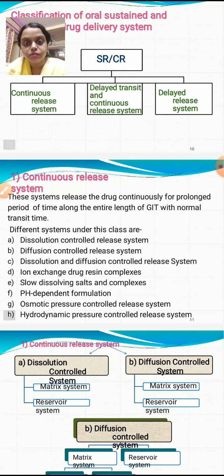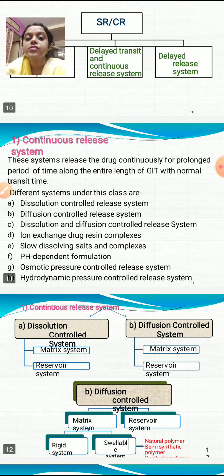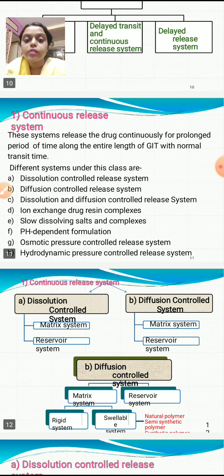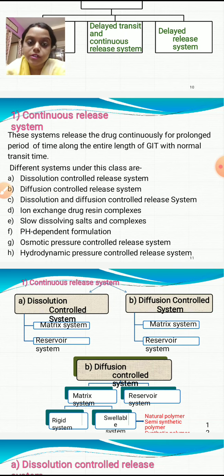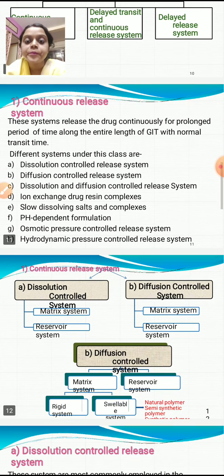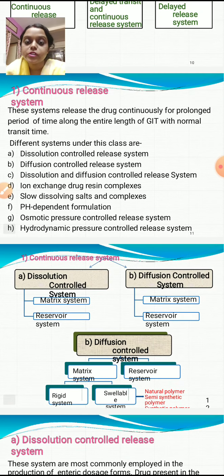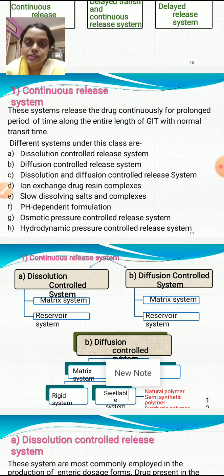Continuous release systems release the drug continuously for a prolonged period of time along the entire length of the gastrointestinal tract with normal transit time. Different systems under this class include: dissolution controlled release system, diffusion controlled release system, dissolution and diffusion controlled release system, ion exchange, slow dissolving salts and complexes, pH dependent formulation, osmotic pressure controlled release system, and hydrodynamic pressure controlled release system.